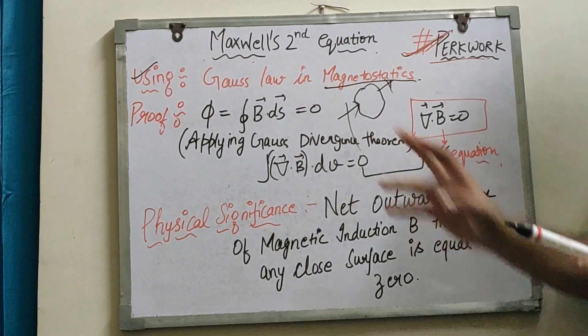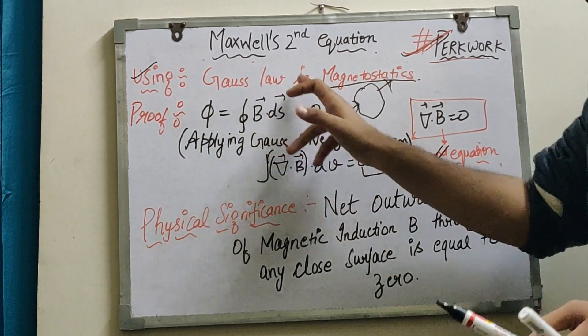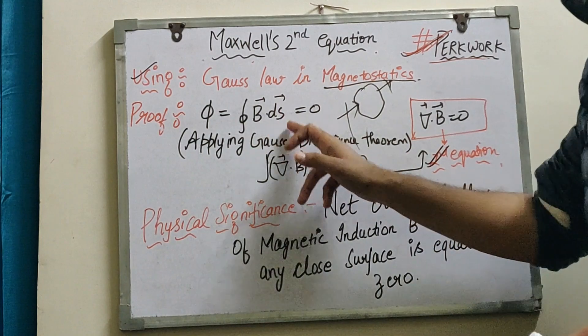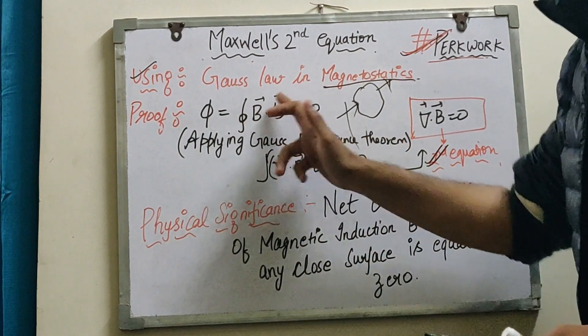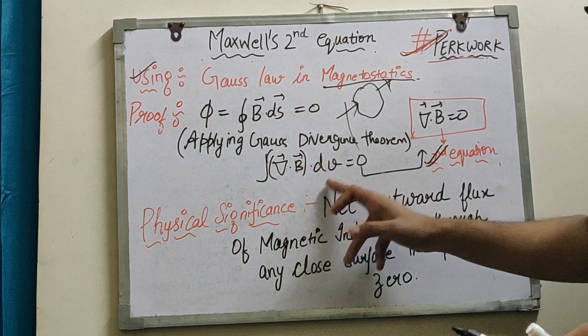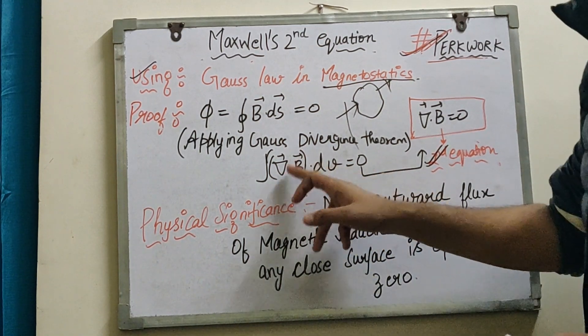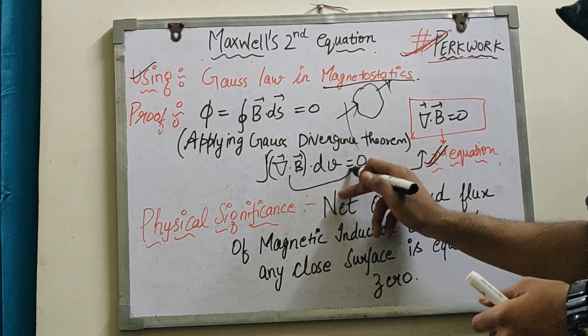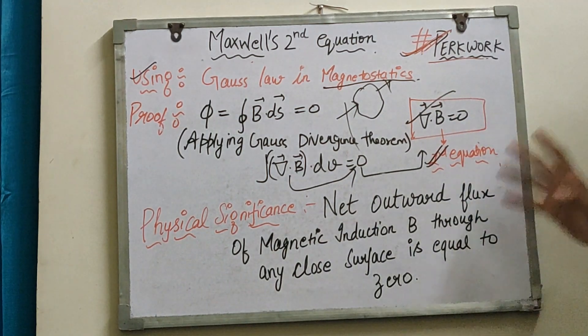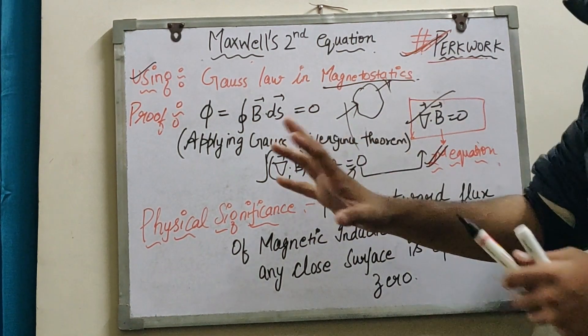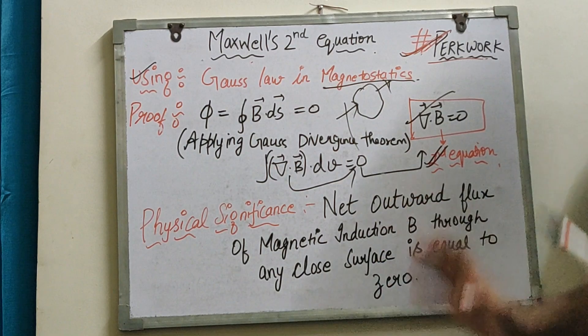Simple equation - we don't have to do much for Maxwell's second equation. We know Gauss's law in magnetostatics: ∮B·ds = 0. We applied Gauss's divergence theorem to get ∫del·B dv = 0, and therefore del·B = 0. Simple and easy concept, no rocket science. We'll get the whole number in the exam.